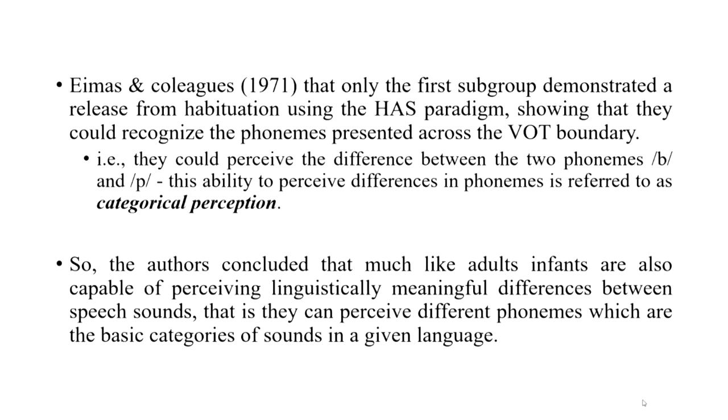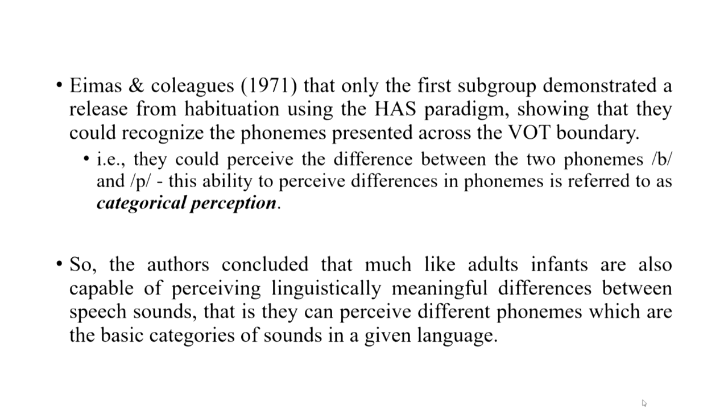This capability to perceive the difference between phonemes 'ba' and 'pa' is referred to as categorical perception. It is a fundamental ability in speech perception, determining how infants will perceive different categories of phonemes in their given language. For example, English has around 44 phonemes — the basic sound categories — and the entire English language can be drawn back to these 44 distinct categories. Categorical perception is therefore one of the major and fundamental abilities required for an infant to start perceiving speech, and the authors concluded that, much like adults, infants are capable of perceiving linguistically meaningful differences between speech sounds.